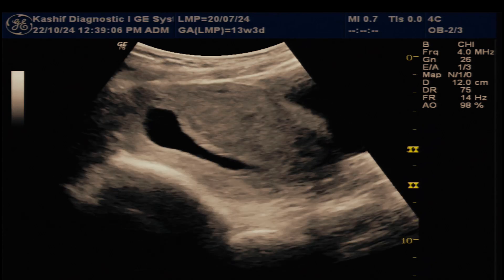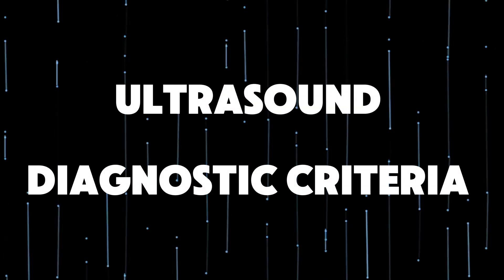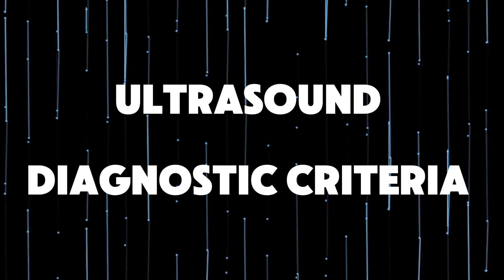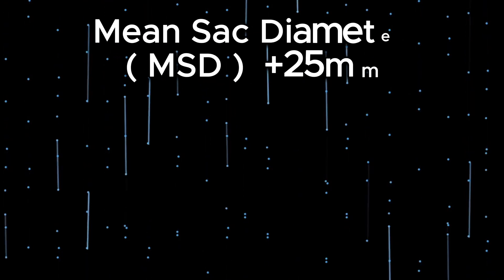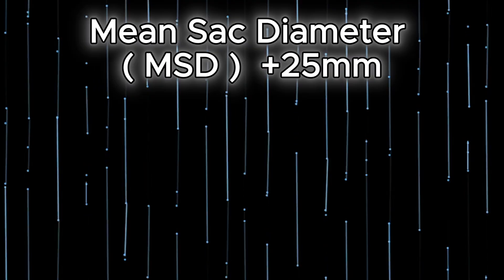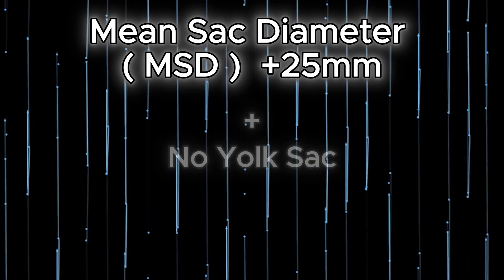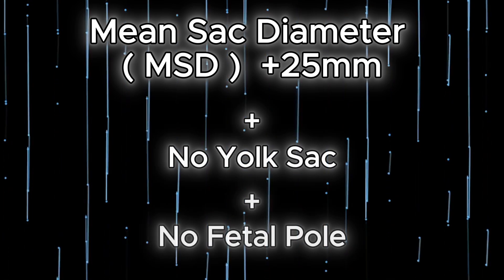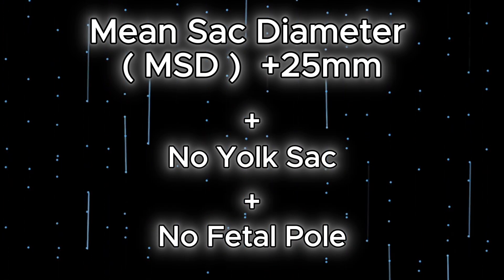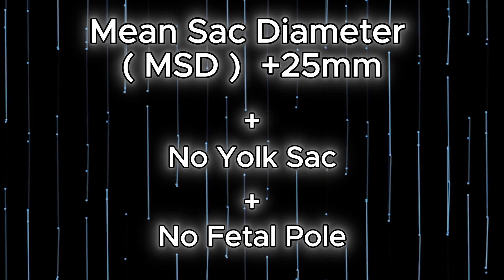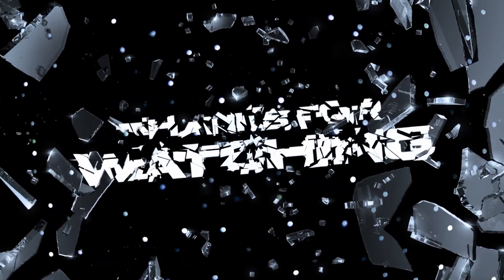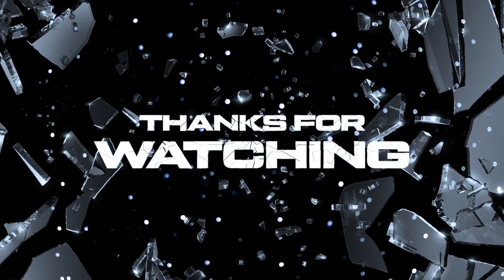It should be properly diagnosed on ultrasound scan. The ultrasound diagnostic criteria: when the mean sac diameter is greater than 25 mm with no yolk sac and no fetal pole, this is a confident diagnosis of an anembryonic pregnancy. Thank you.